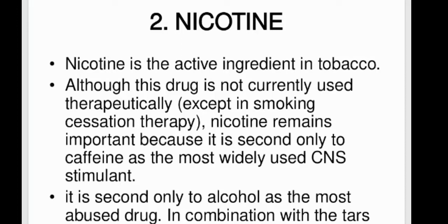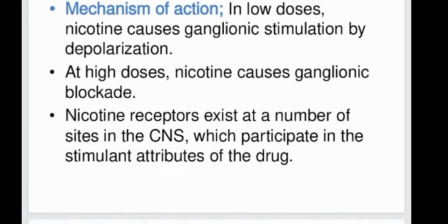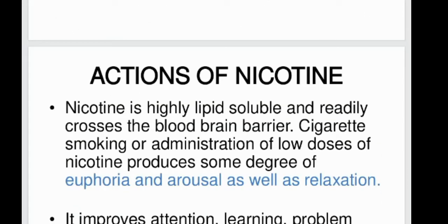Nicotine is the active ingredient in tobacco. Although not currently used therapeutically, it is second only to caffeine as the most widely used CNS stimulant. At low doses, nicotine causes ganglionic stimulation by depolarization; at high doses it causes ganglionic blockade. It is highly lipid soluble and readily crosses the blood-brain barrier. Cigarette smoking or low doses of nicotine produce some degree of euphoria.